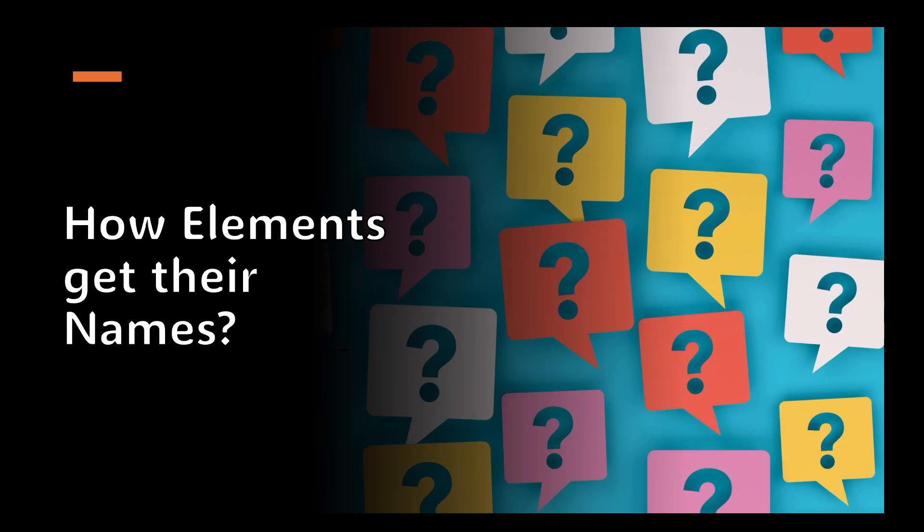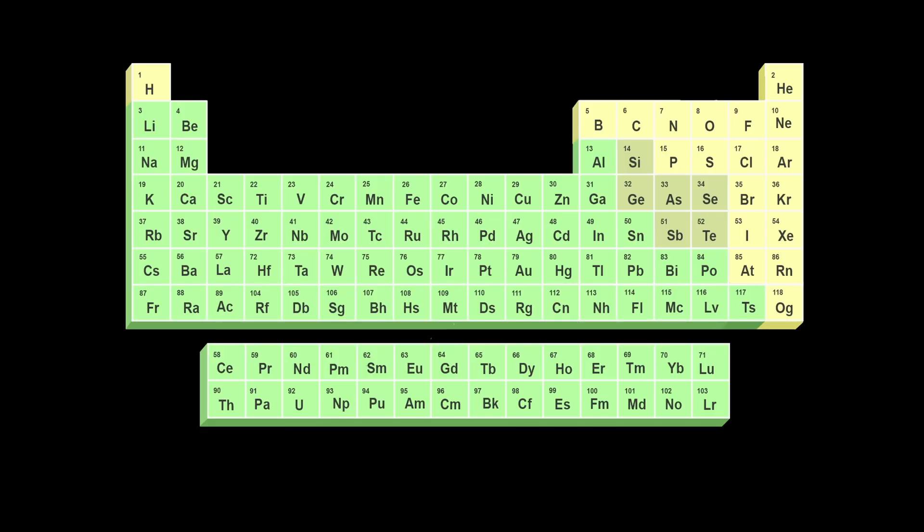Hi there! Have you ever wondered how elements actually get their names in the periodic table? Here is a modern periodic table and you can see that there are a total of 118 elements in the periodic table, all with unique names. Let's pick up a few elements and see how they actually get their names.